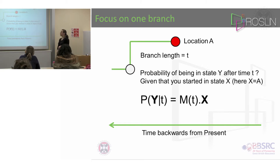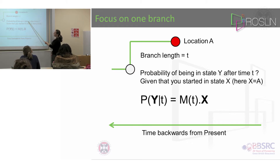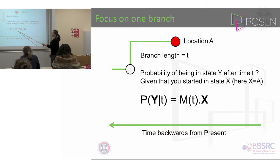In general, what you're really trying to calculate is: given that you started in state X — where X is just location A — what is the probability of being in state Y, some other state, after time T? And you would do this using this matrix equation.